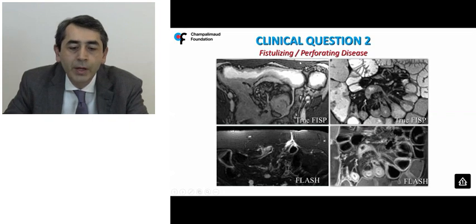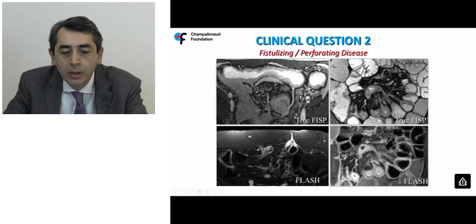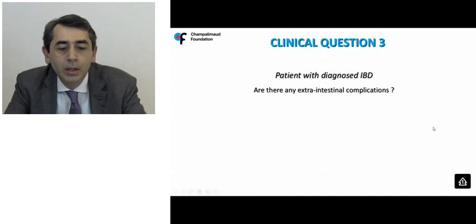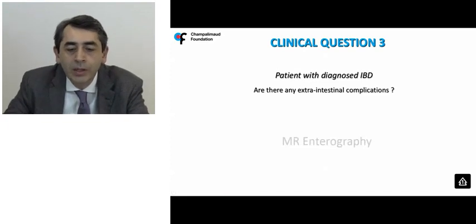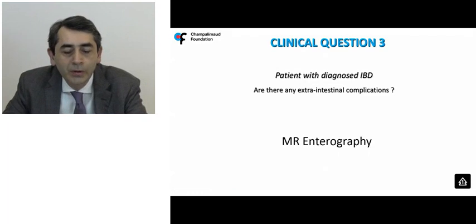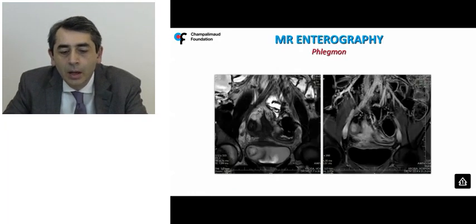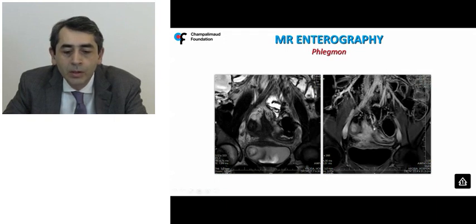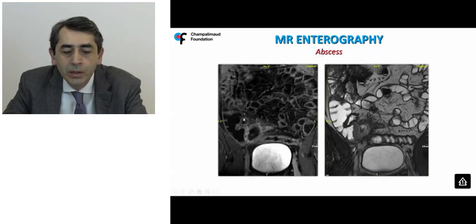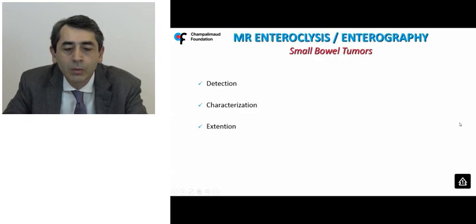For fistulizing/perforating disease, MR enteroclysis can demonstrate entero-enteric fistulas and enterocutaneous fistulas, shown by increased contrast uptake due to perifistulous inflammation. For extra-intestinal complications in Crohn's patients — where adequate luminal distension is not of primary importance — MR enterography can easily disclose inflammatory masses such as phlegmons or abscesses, seen on both TruFISP and post-contrast T1-weighted sequences.